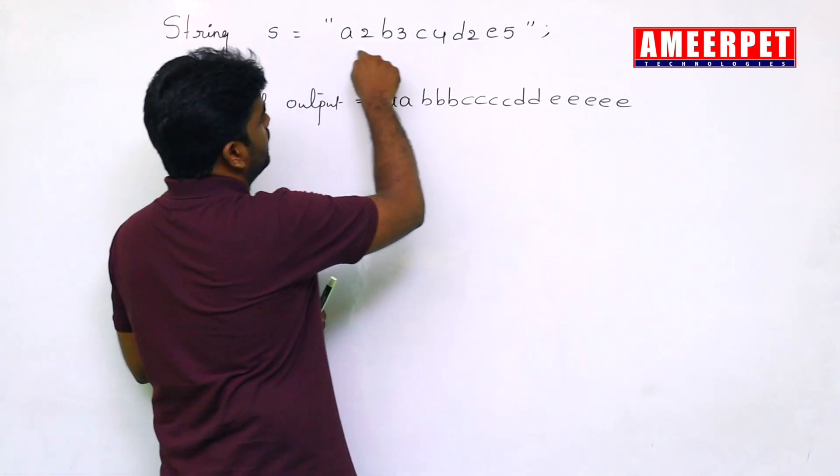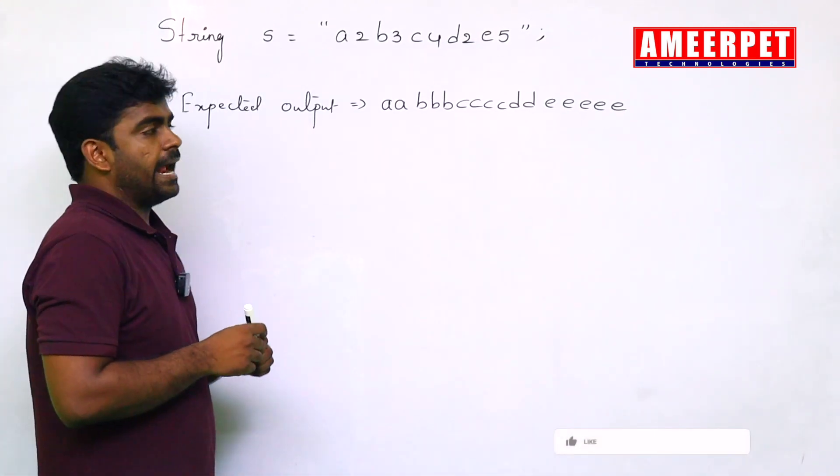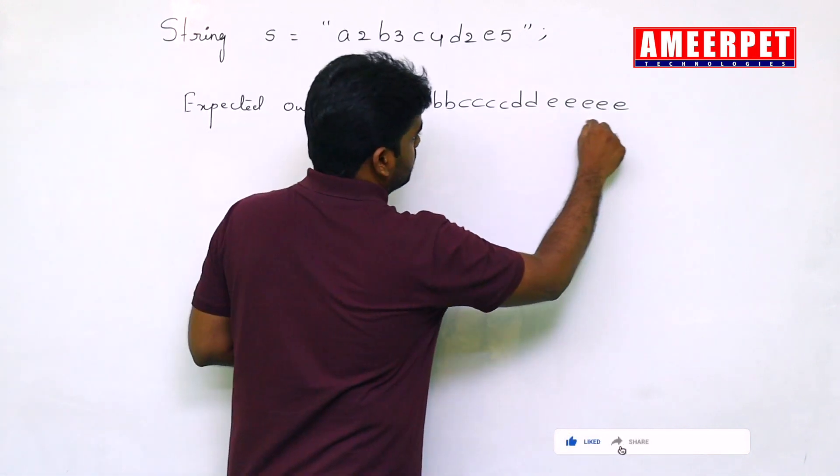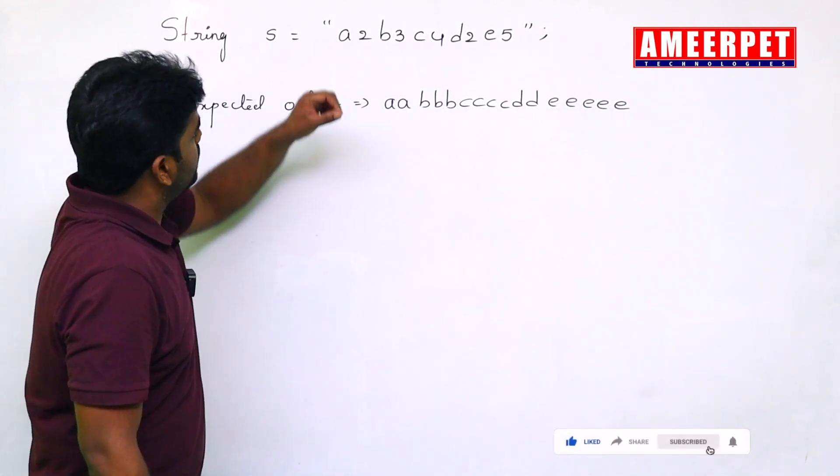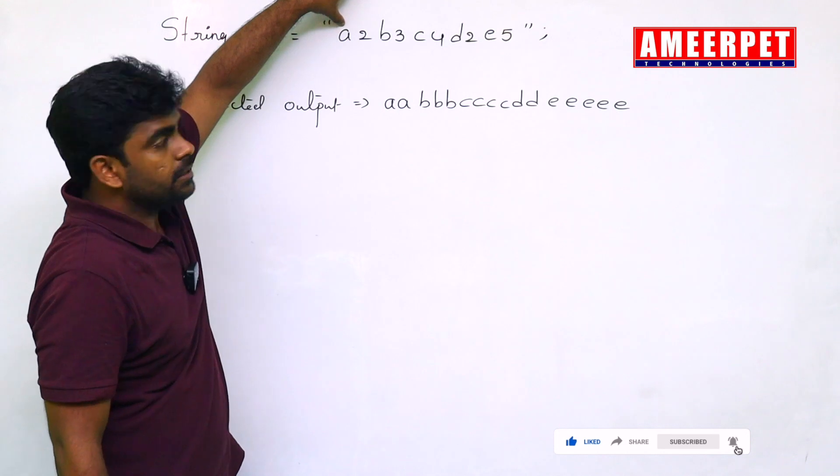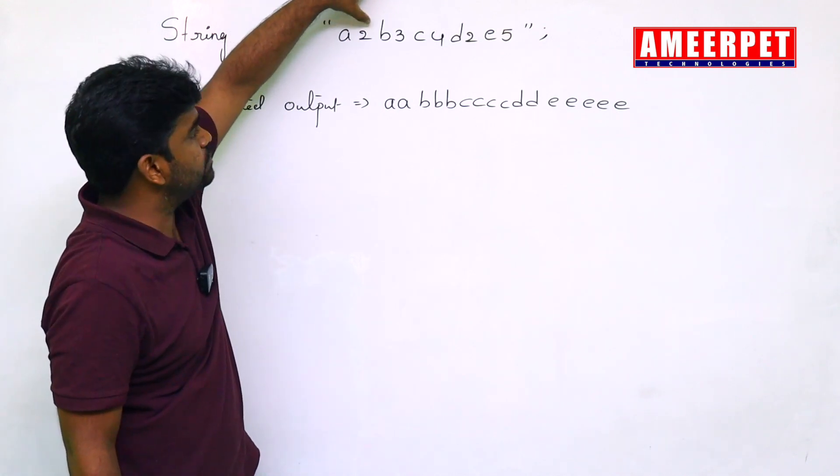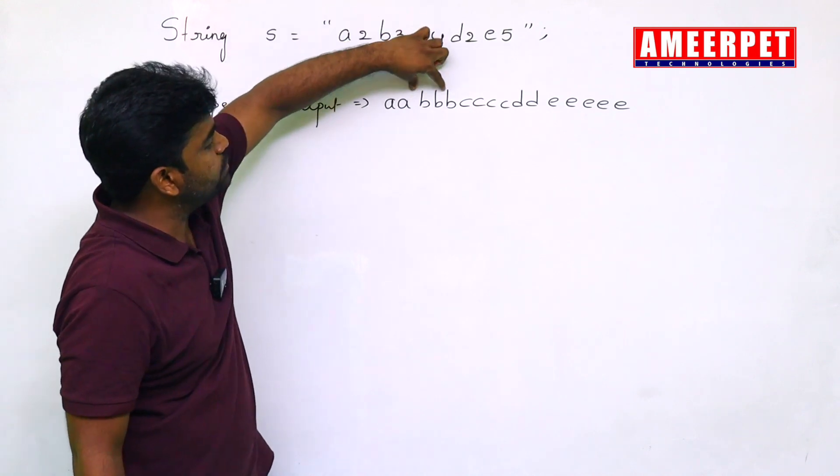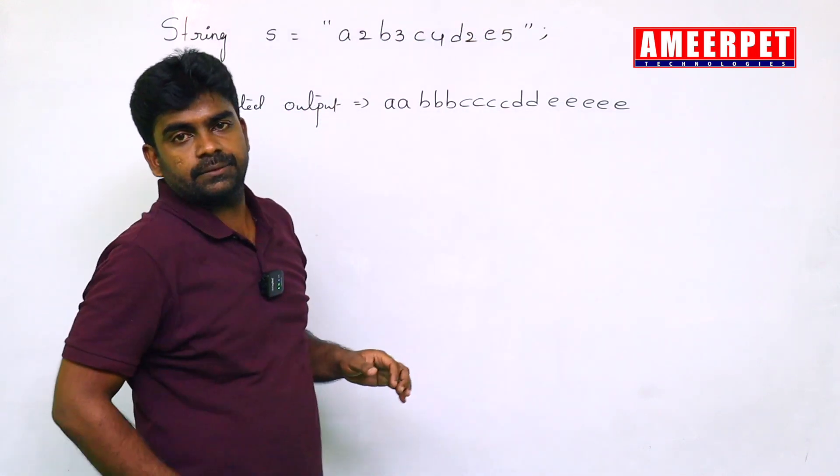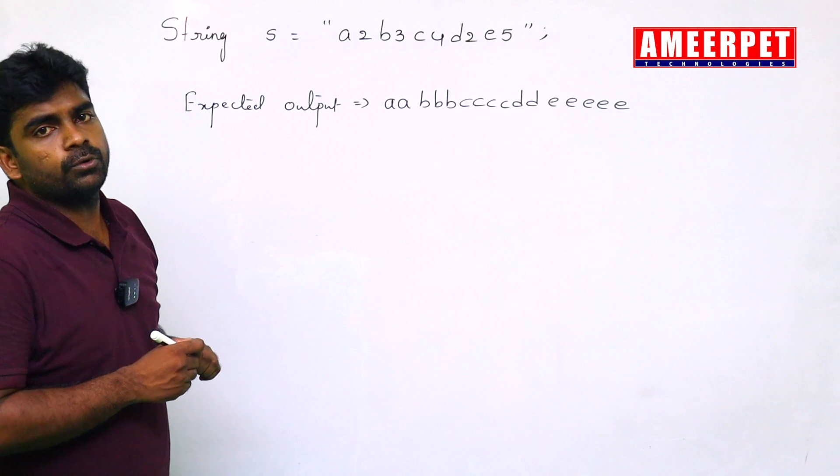This is the string what they have given and this is the expectation. See here, the alphabet, we need to print followed by the number given, how many times the number, those many times we need to display that one. Now, how to write the code?